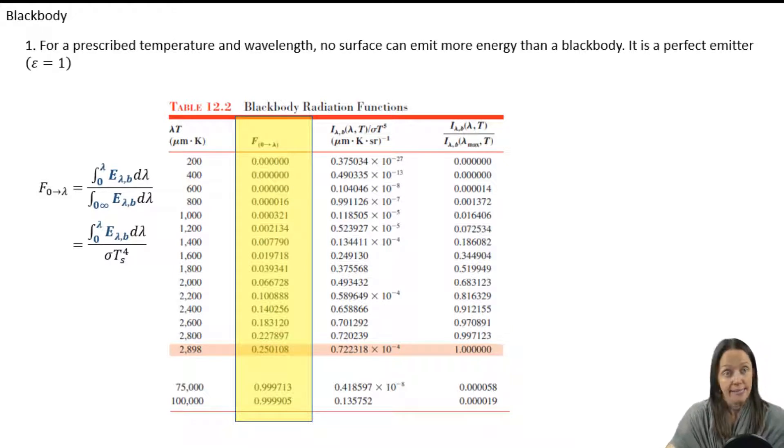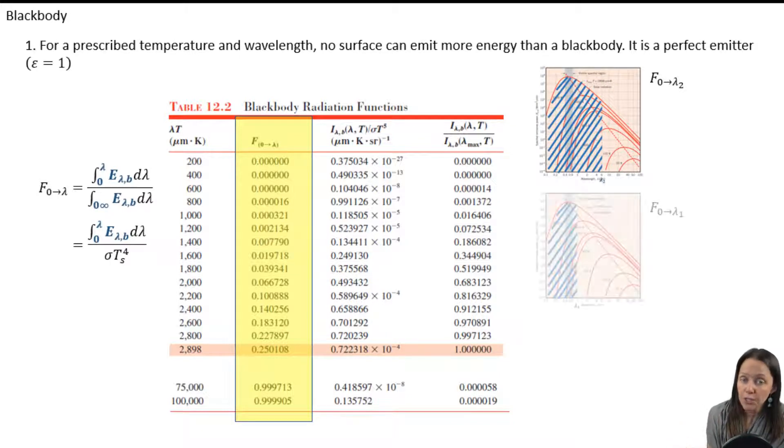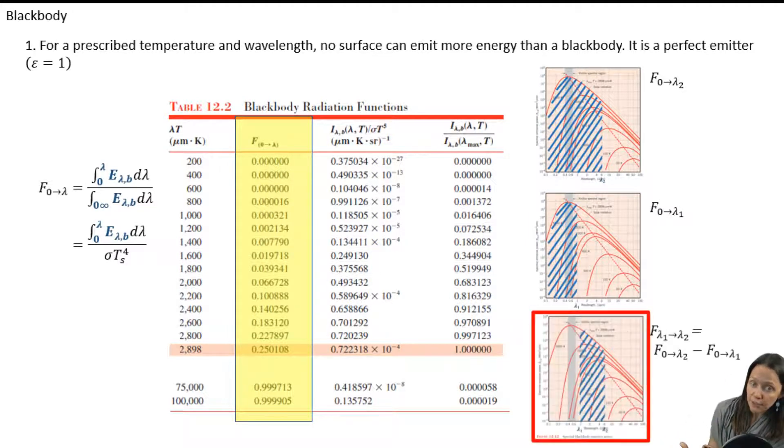You see that as I increase the range of wavelengths that I'm looking at from zero to some high wavelength, which would give me a high lambda T, that fraction of emissive power that I'd be considering would be higher too. But what if I want to know the fraction of emissive power between two wavelengths? So I'm going to take the fraction of emissive power from zero to lambda 2, and then the fraction of emissive power from zero to lambda 1. And then the difference between them is the fraction of a black body at a given temperature between those two wavelengths.